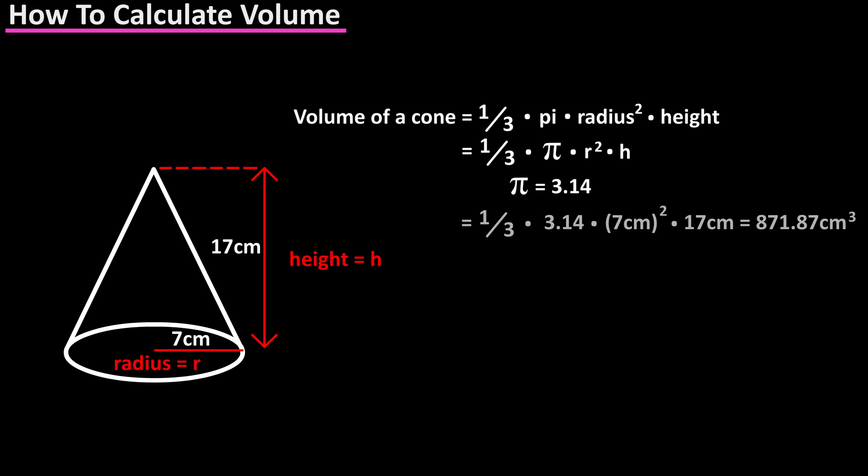From the diagram we have 1 over 3 times 3.14 times 7 centimeters squared times 17 centimeters. Calculating out and rounding off, we get 871.87 centimeters cubed.